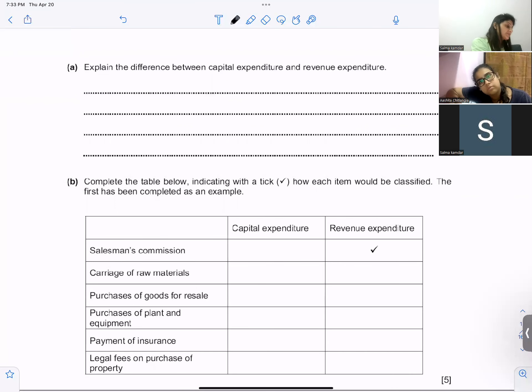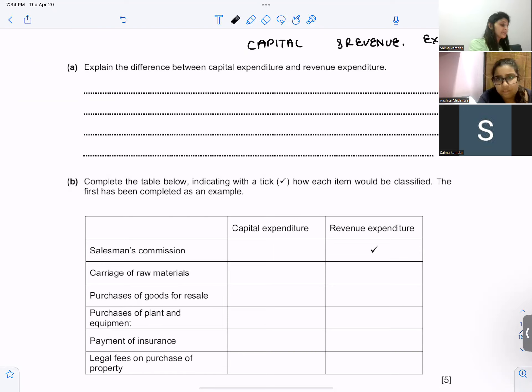This is a past paper question related to capital and revenue expenditure. Can you tell me what is the difference between capital and revenue expenditure? Capital expenditure is an expense that is not recurring in nature, for example, purchase of machinery. And revenue expenditure is an expense that is recurring in nature, for example, rent paid or salary paid.